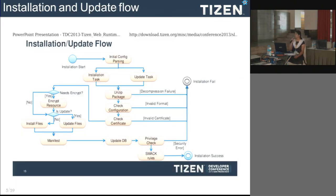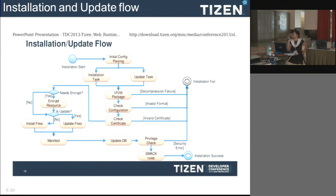This is how installation and update happens for a web application. A web application consists of HTML files, JavaScript files, and CSS files. There is one important file called the config file which tells us the start page of your application. For example, the launch pad needs to know which is the starting point of your application, and those things are defined in the config.xml file.